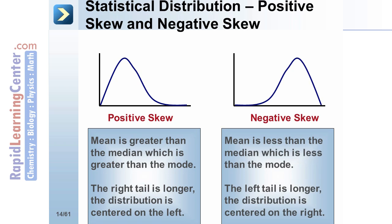In negative skew, the mean is less than the median, which is less than the mode. The left tail is longer and the distribution is centered on the right.